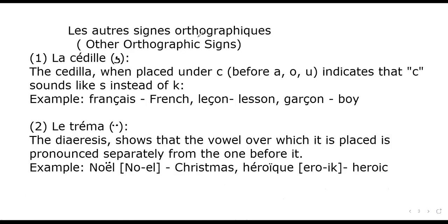Now, les autres signes orthographiques — other orthographic signs. The first one is la cédille, the cedilla. When placed under c before a, o, or u, it indicates that the c is pronounced like s instead of k. For example: français meaning French, leçon meaning lesson, garçon meaning boy.